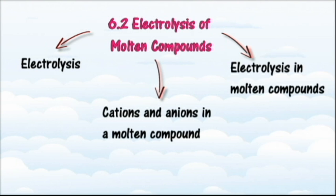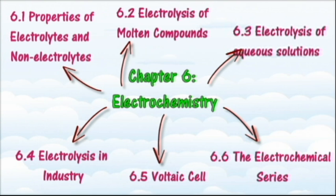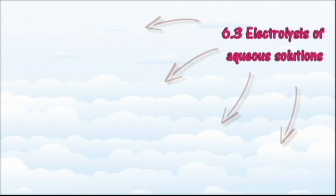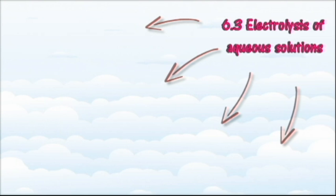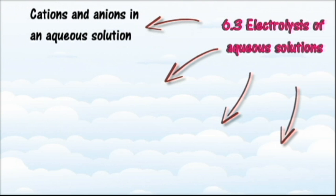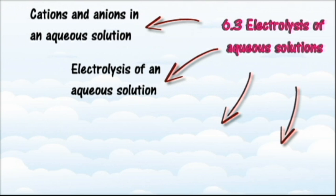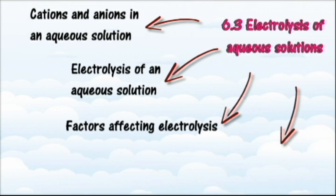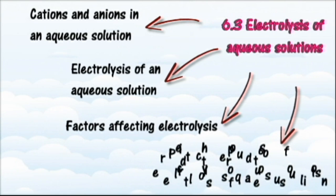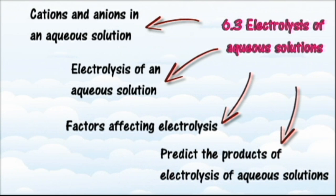In section 6.3 we will learn about electrolysis of aqueous solutions. At the end of this section you should be able to identify cations and anions in an aqueous solution, describe the electrolysis of an aqueous solution, explain using examples the factors affecting electrolysis of an aqueous solution, write half equations for the discharge of ions at the anode and the cathode, and predict the products of electrolysis of aqueous solutions.